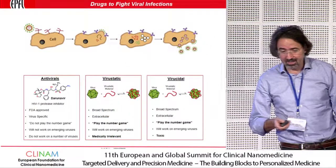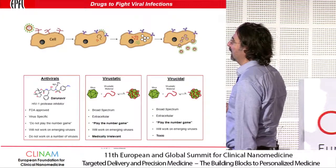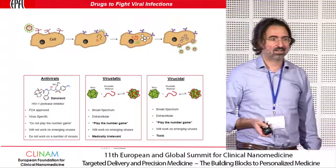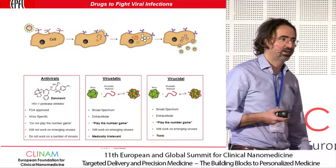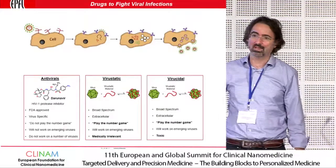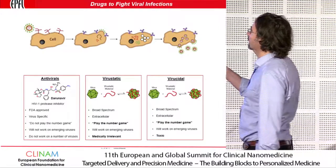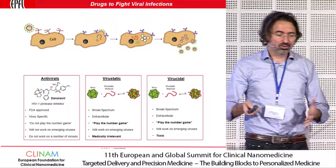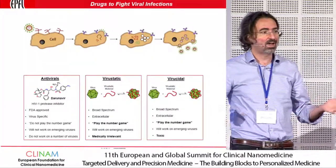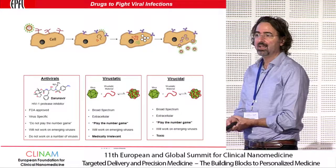There are three big classes of drugs we currently use against viruses. Antivirals block the replication of viruses intracellularly — they are the only truly FDA-approved drugs — but every virus uses a different replication pathway, and many viruses change that pathway upon mutation. So these drugs are very virus-specific, which is fine for a known target virus, but developing a new drug for all viruses is a very tall order. You also won't have time to develop such a drug in the case of an emerging disease.